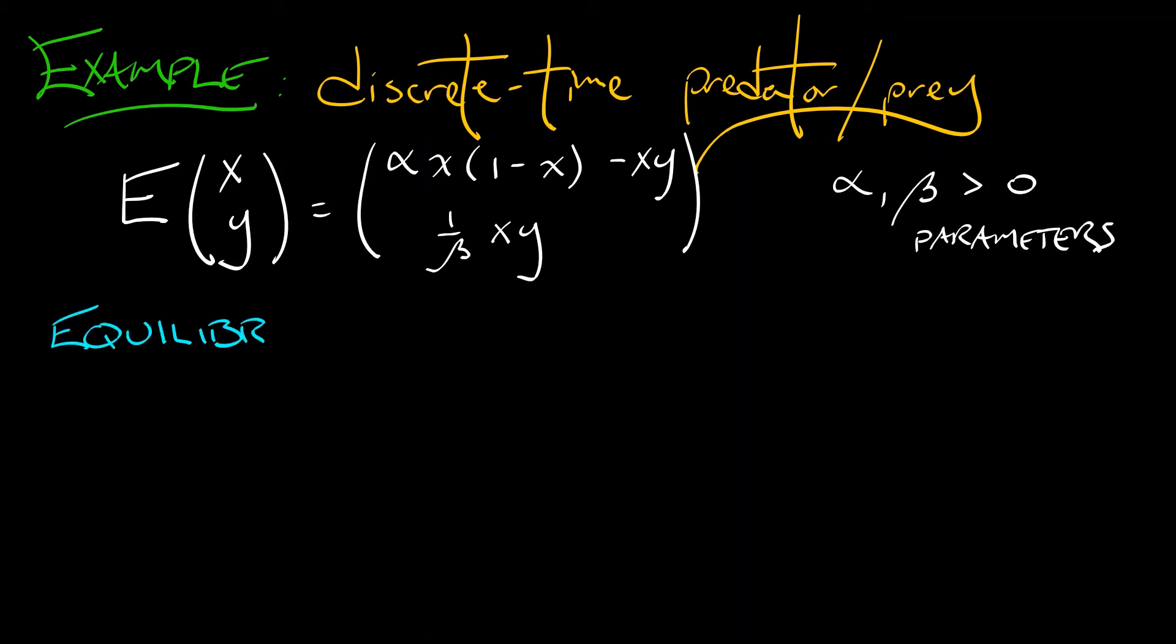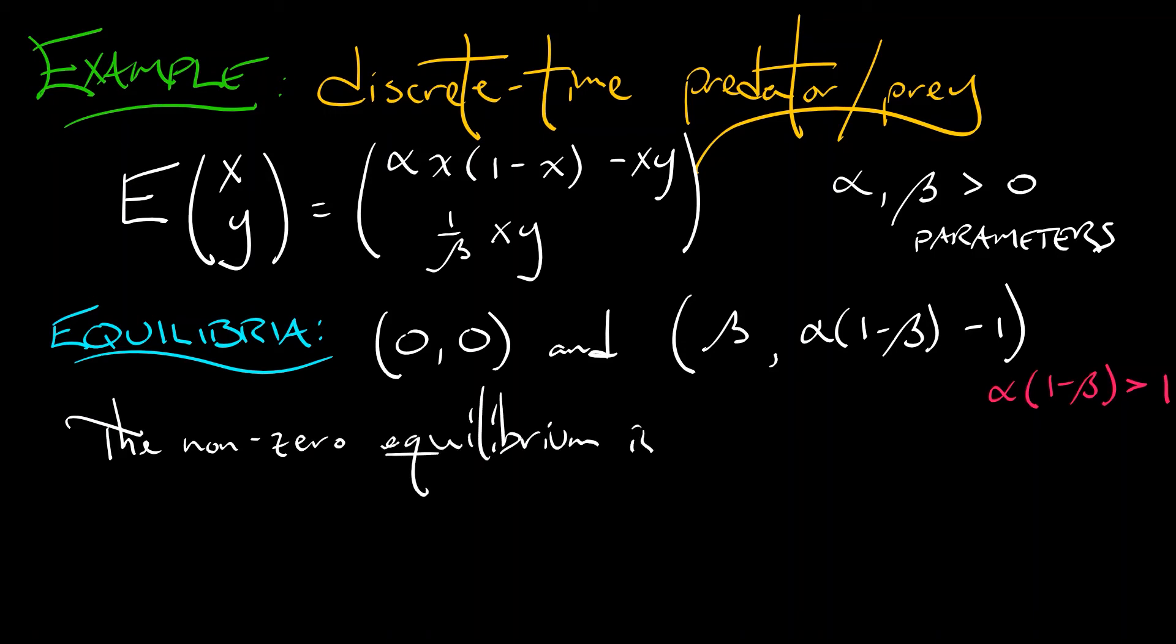Now, let's solve for the equilibria in this system. I'm going to leave it to you to check that the equilibria happen at (0,0), and (beta, alpha*(1-beta)-1), so that we need some constraints on these parameters, namely alpha*(1-beta) has to be bigger than 1. Now, go ahead and check that. Remember, finding equilibria in discrete time systems is different than in continuous time. Now, of course, it's that non-zero equilibrium that is the interesting one. We expect the origin to maybe not be the most interesting thing for a population.